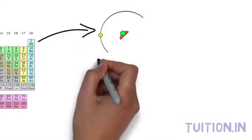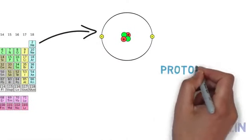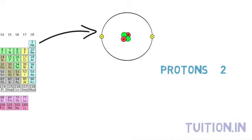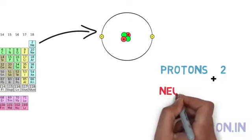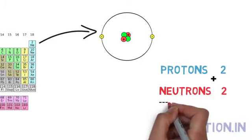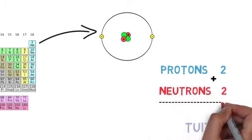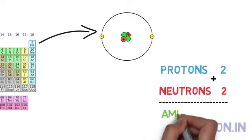For instance, a helium atom has two protons so its atomic number is two. It also has two neutrons. Adding number of protons and neutrons, we get four which is helium's atomic mass unit.